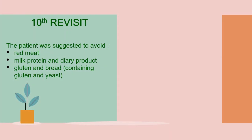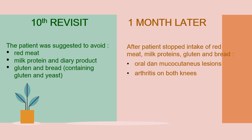At the 10th revisit, we advised the patient to avoid red meat, milk protein and dairy products, gluten, and bread. One month later, oral and mucocutaneous lesions healed, as did the arthritis on both knees.